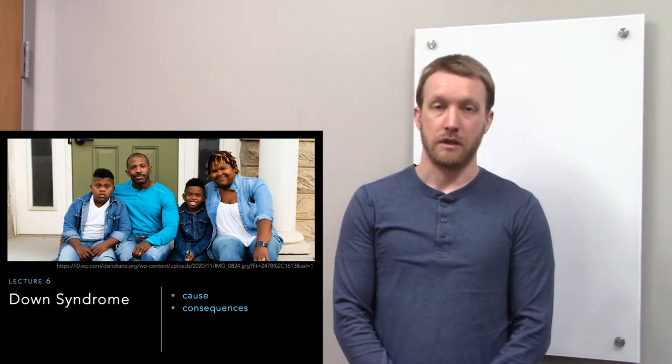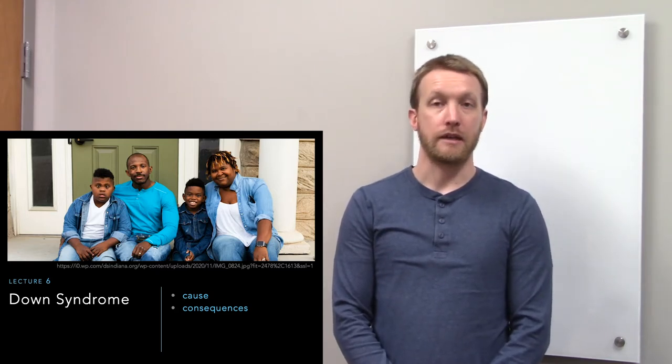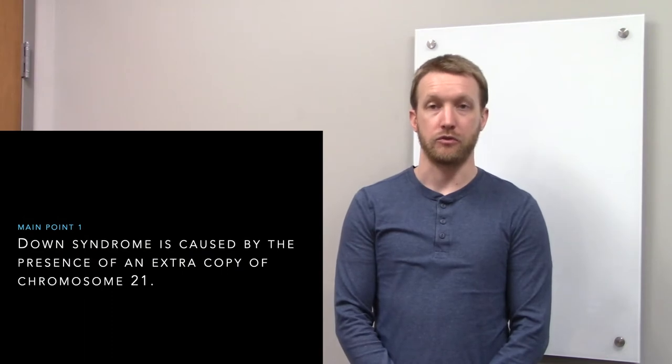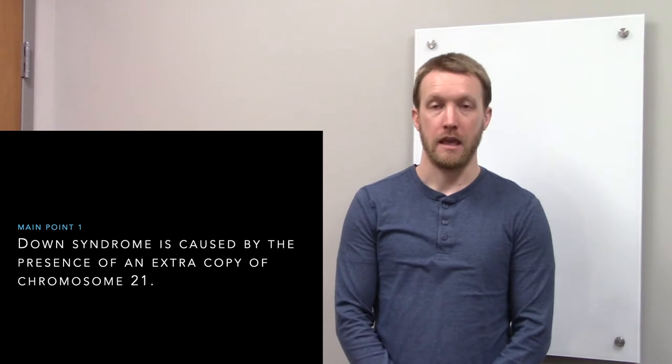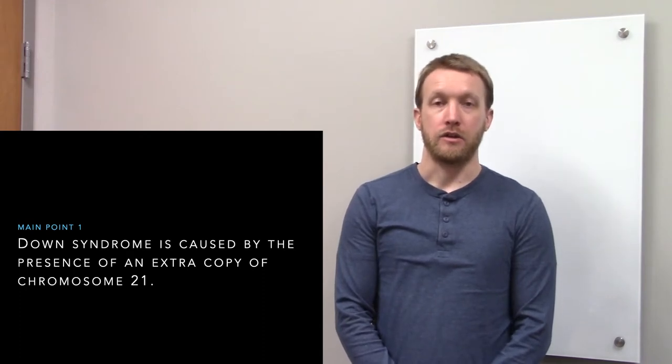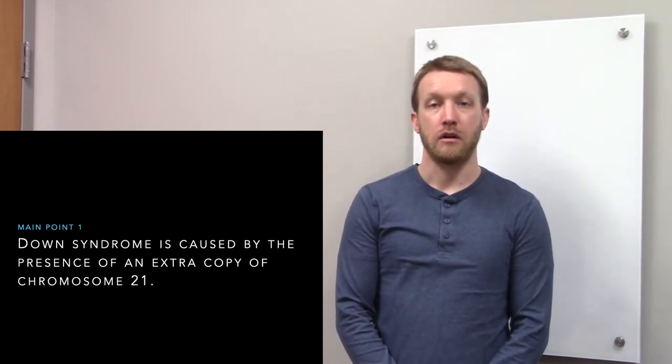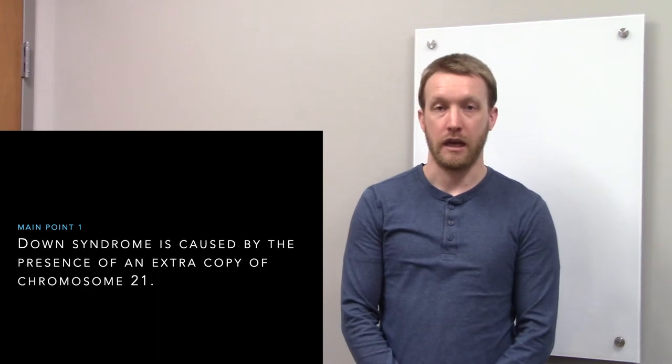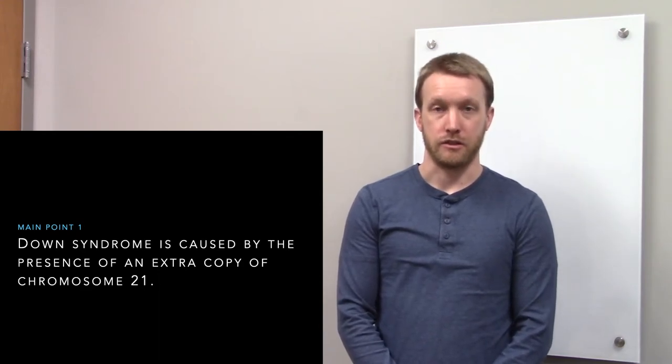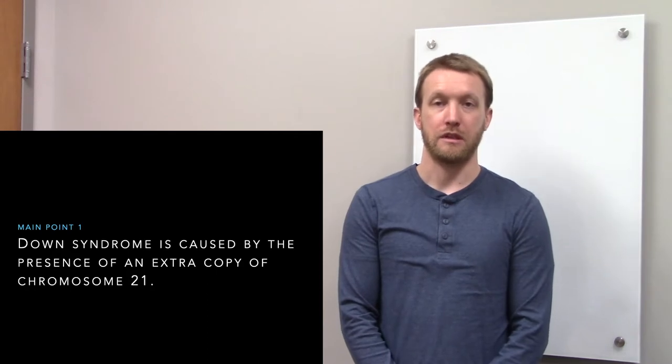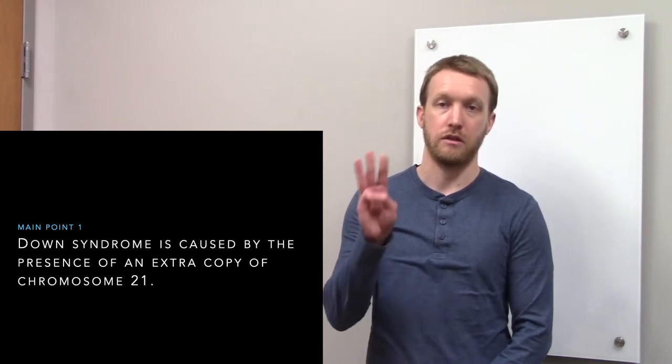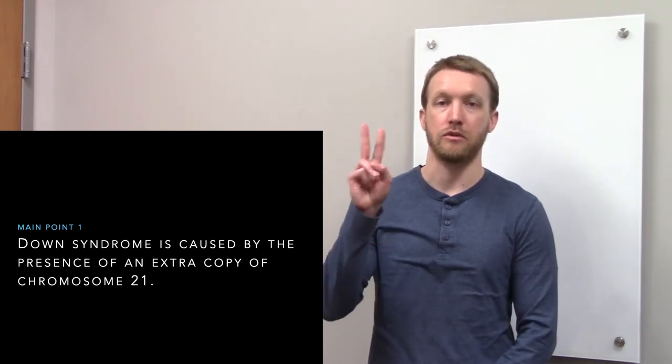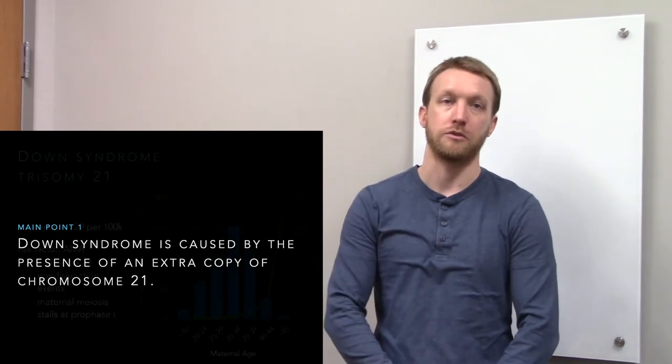Down syndrome is caused by an extra copy or an extra portion of chromosome 21. In both cases, we have additional genetic material that creates an imbalance in the number of copies of genes that we have. Because we're dealing with an extra copy of chromosome 21, Down syndrome is also called trisomy 21. We're having three copies as opposed to the typical two copies of chromosome 21.